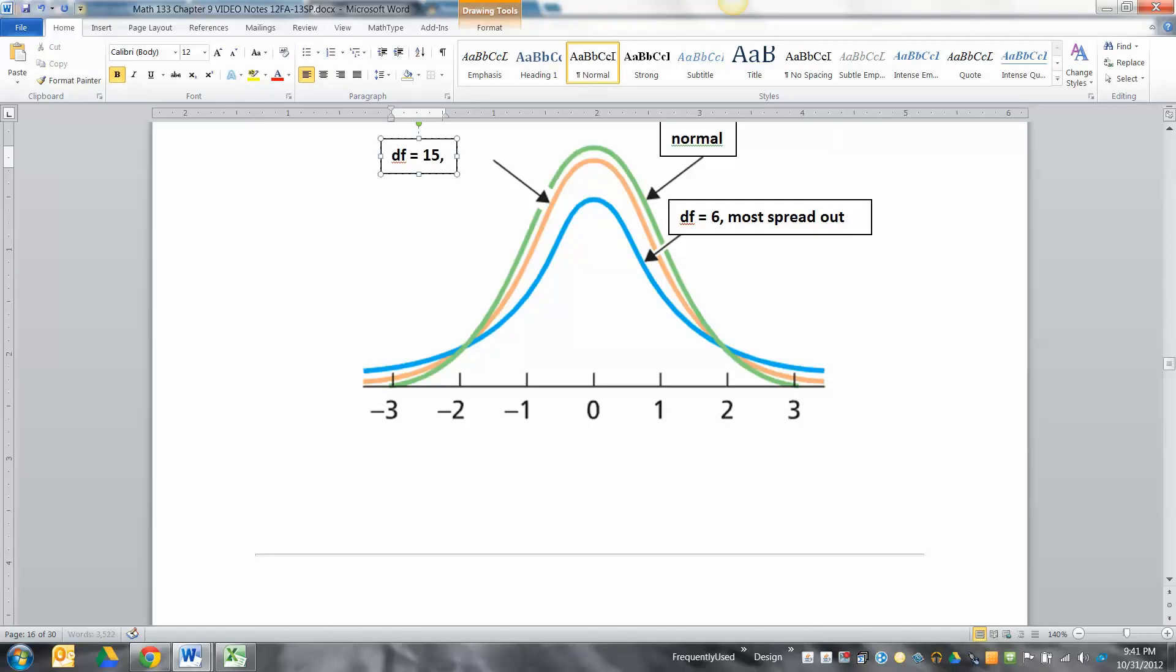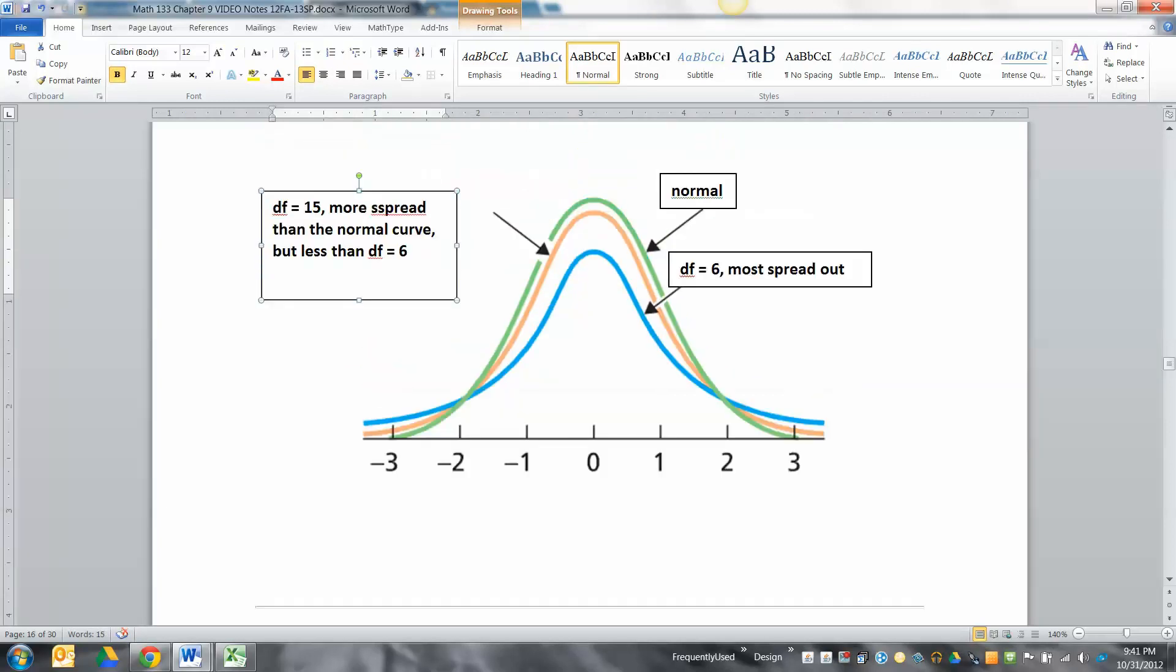That orange curve in the middle, where degrees of freedom is 15, is more spread out than the normal curve but has less spread than the blue one when degrees of freedom is six. The normal curve is the gold standard that we wish everything would adhere to, which is the green one.